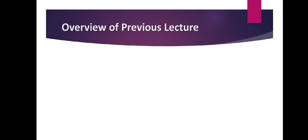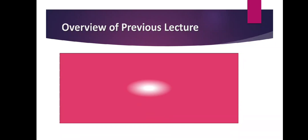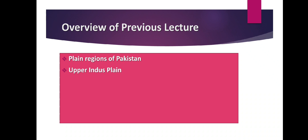Before starting today's lecture, let me give you an overview of the previous lecture. In the previous class we completed the plain region of Pakistan. We divided the plain region of Pakistan into two parts: Upper Indus Plain and Lower Indus Plain. The area above Mithankot is called the Upper Indus Plain and the area below Mithankot is called the Lower Indus Plain.